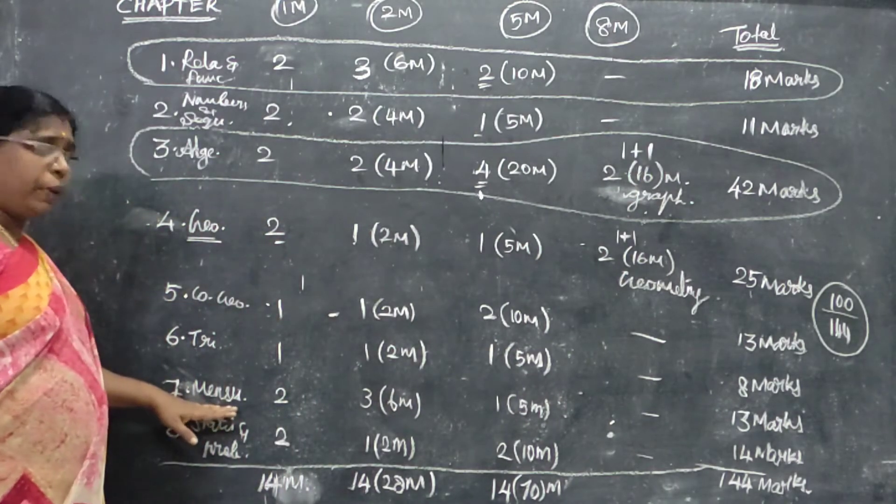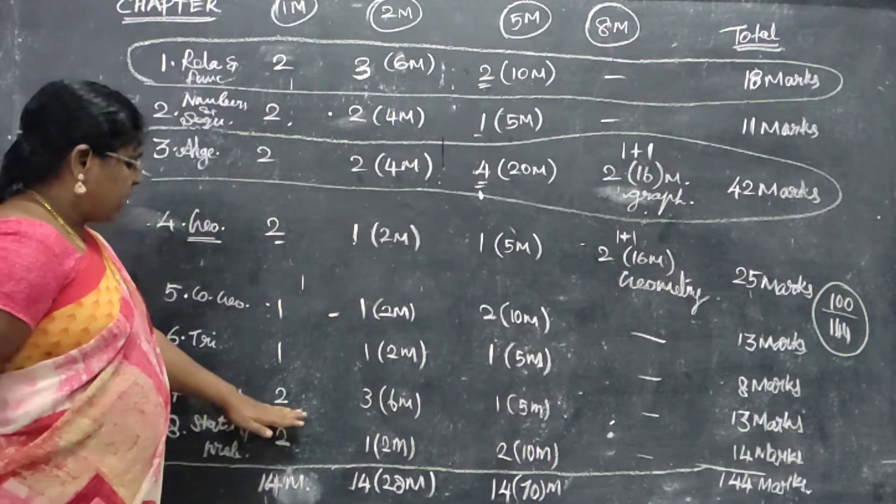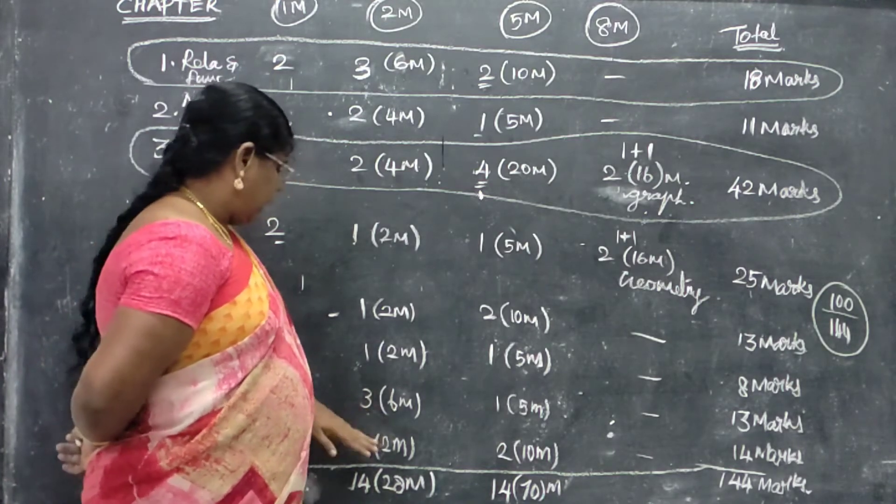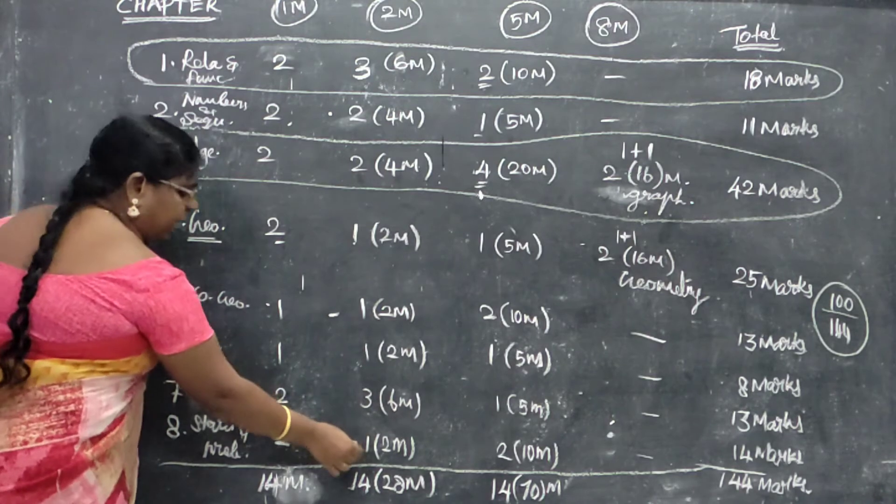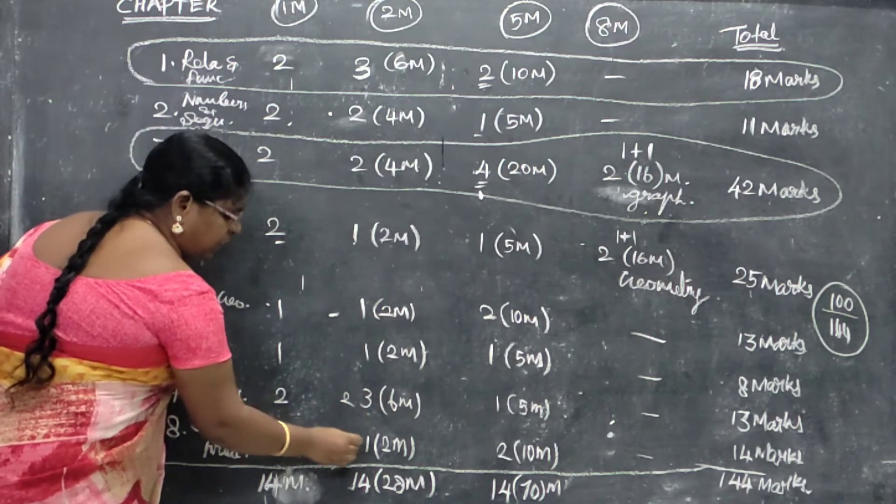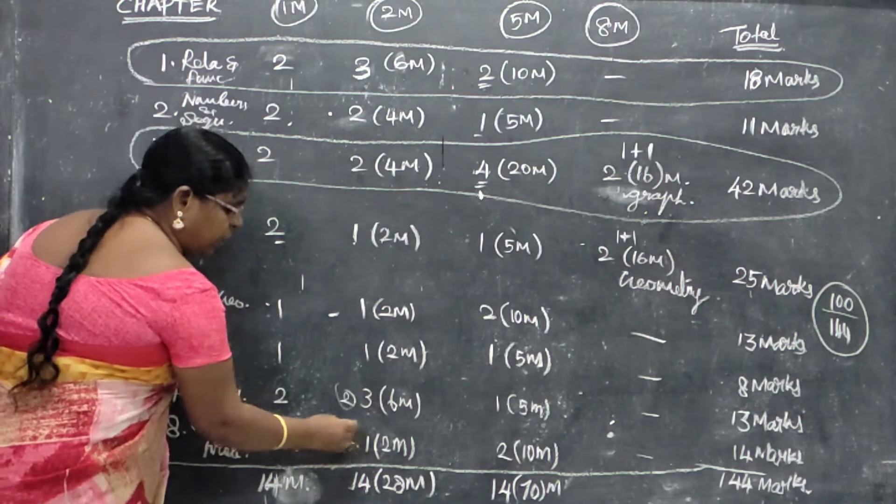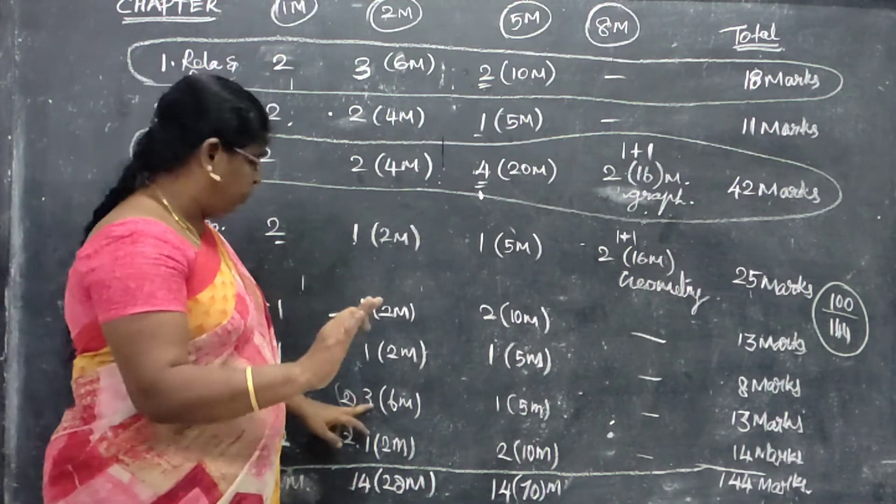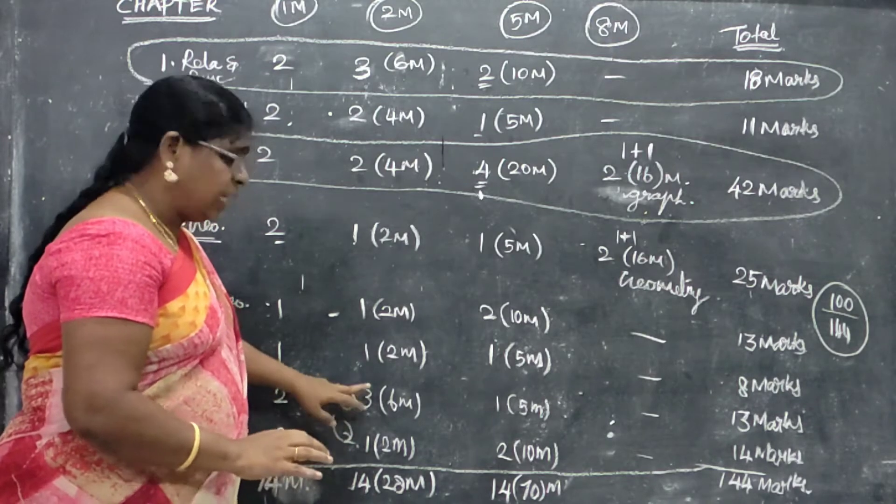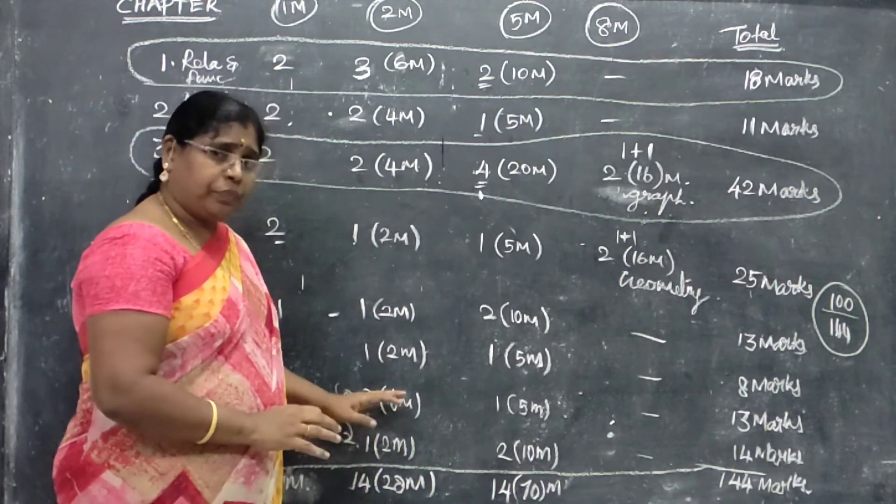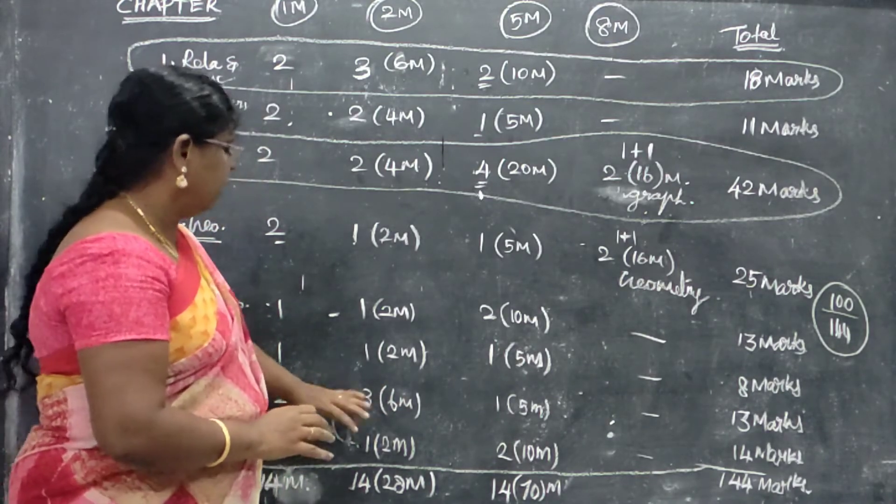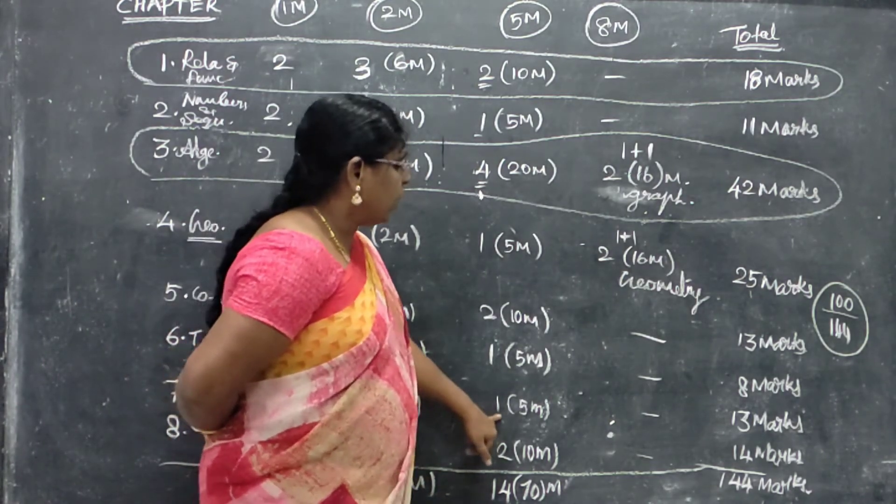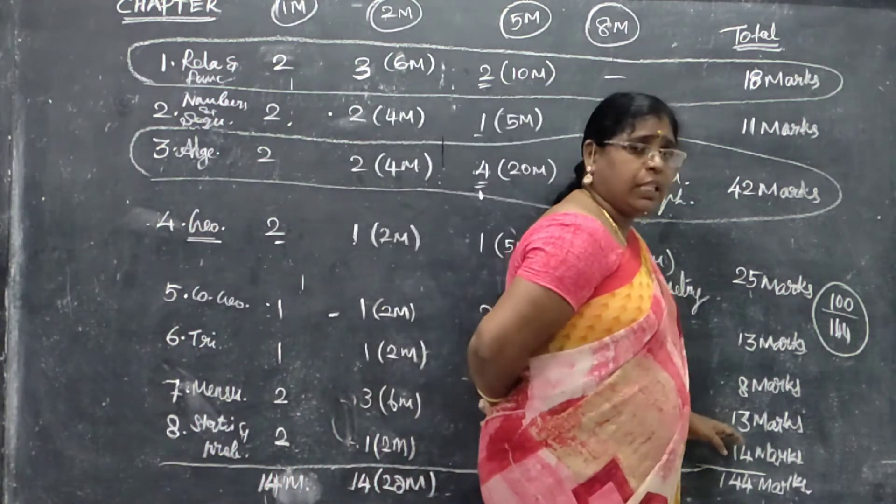Next is seventh chapter, Mensuration. Two, one mark. Three, two marks. Three, two marks. We change the two marks. Two, two, two marks. So we will do this chapter. This chapter is the four two marks. This is the three, this is the two marks. You can see the two marks. Now we will do this. One, five marks. Total marks, 13 marks.